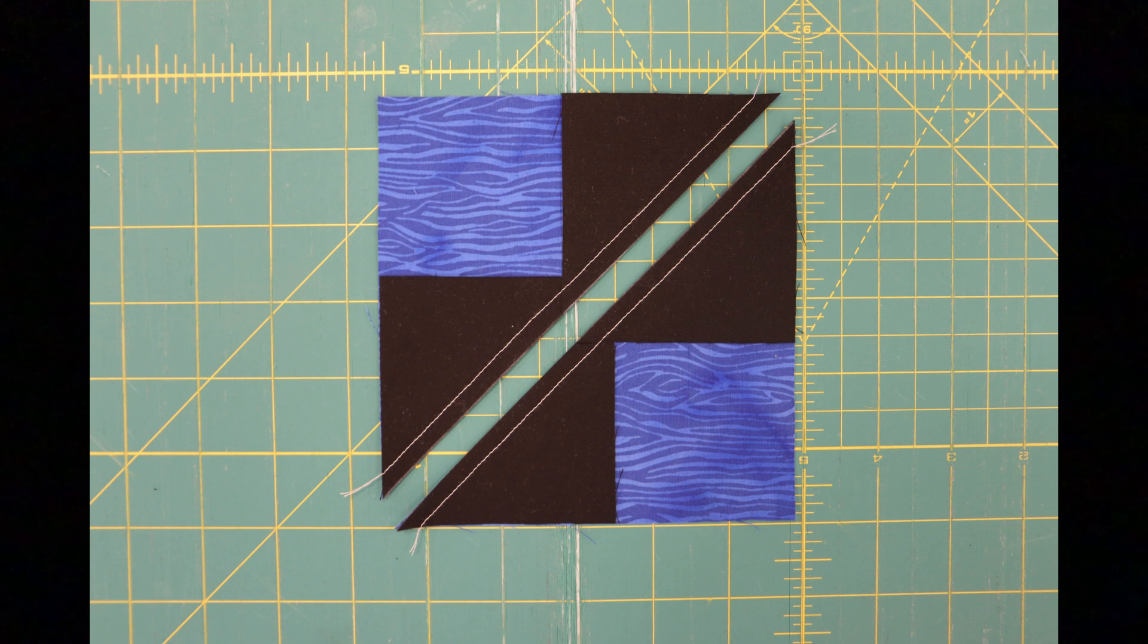And the same as in other blocks, we are also going to make some flying geese just in the method we've done before. You're going to start by taking the four two and seven-eighths inch background squares and marking a diagonal line corner to corner. You place two of those on opposite corners of your large accent square, the large blue square in my case. And with right sides together, you're going to sew a quarter inch on each side. You're going to cut.